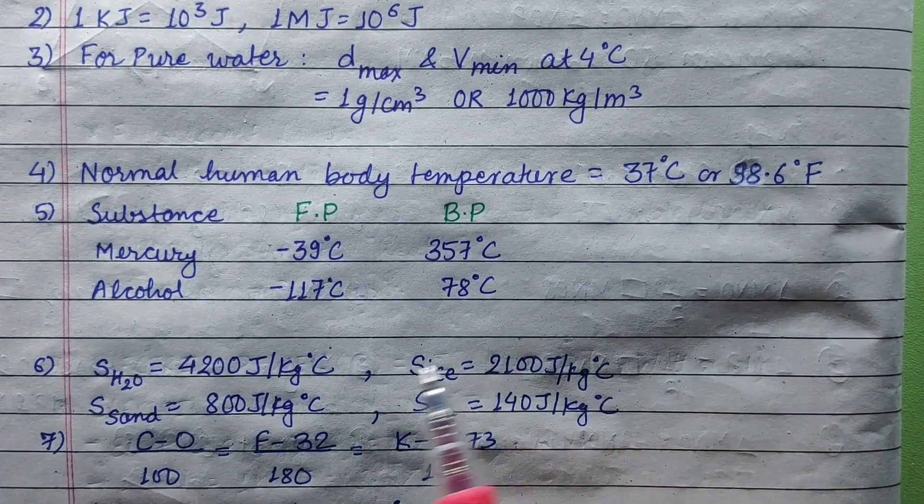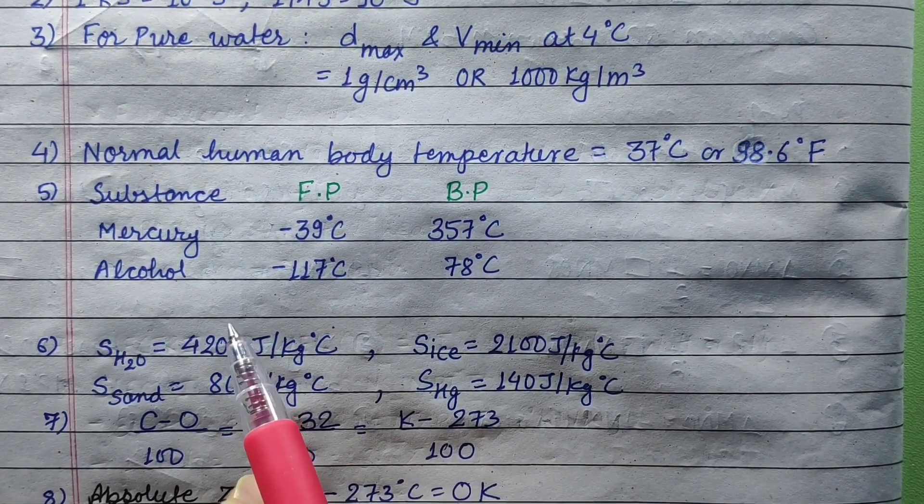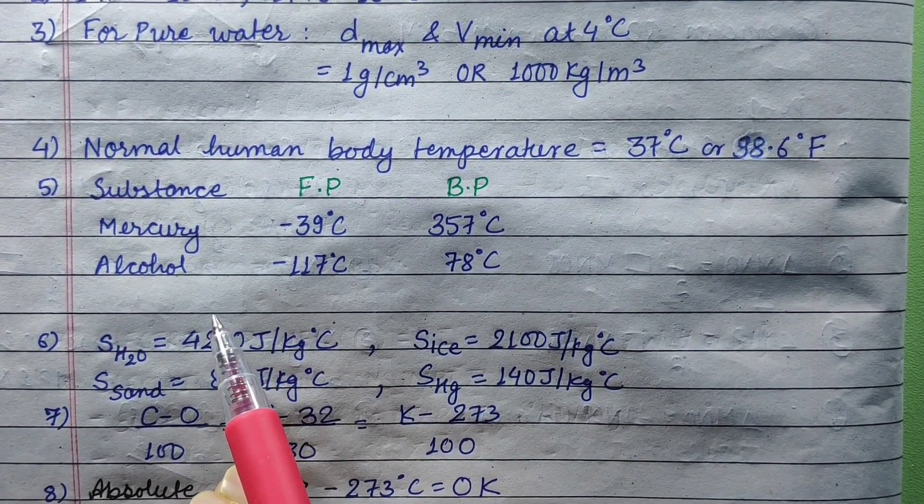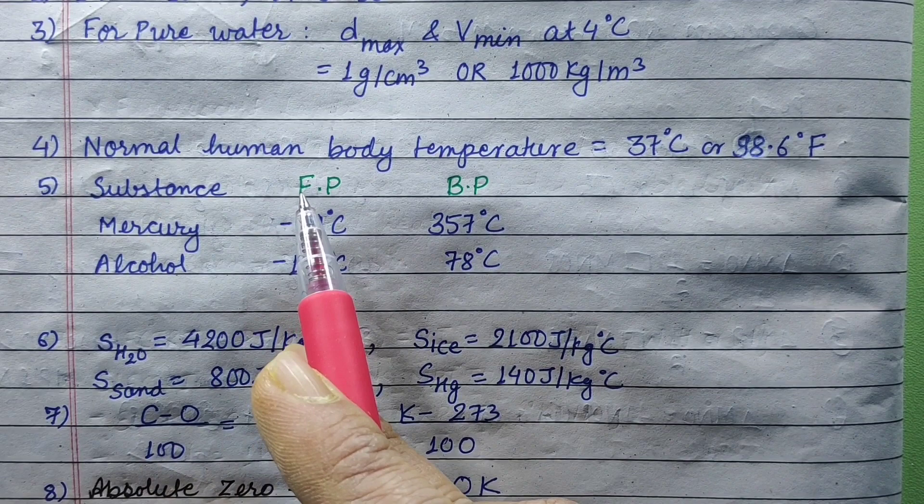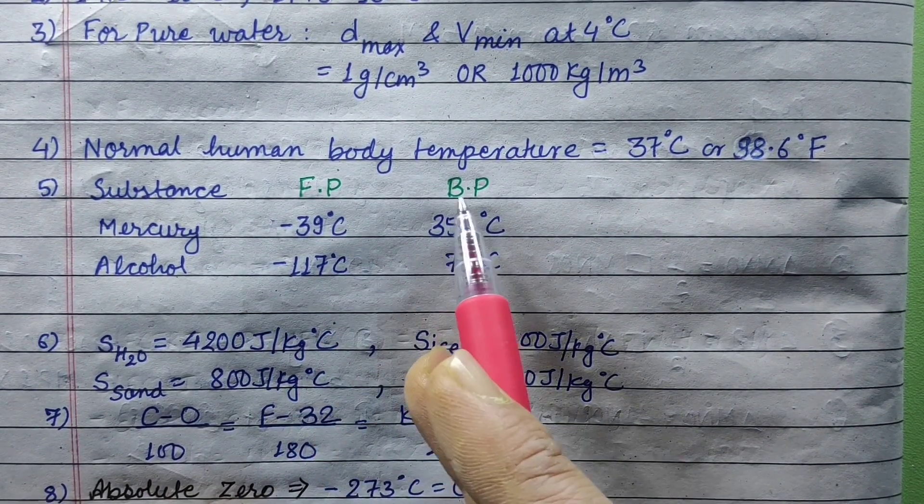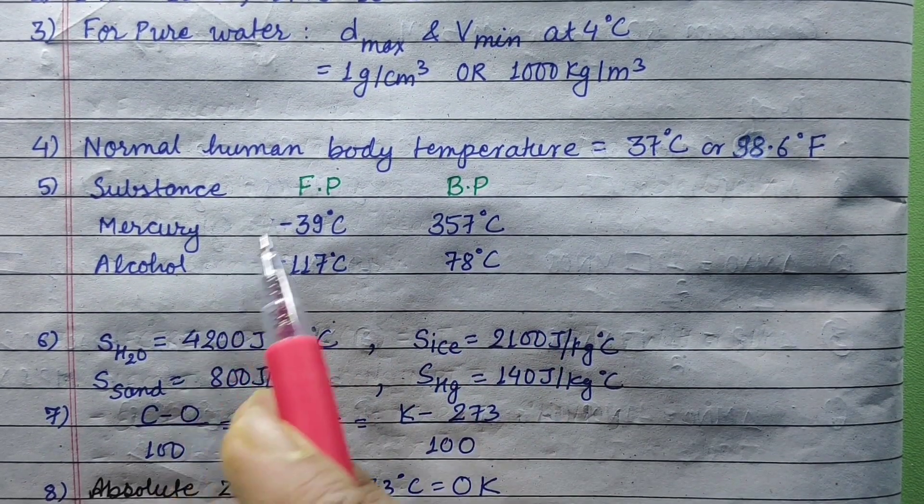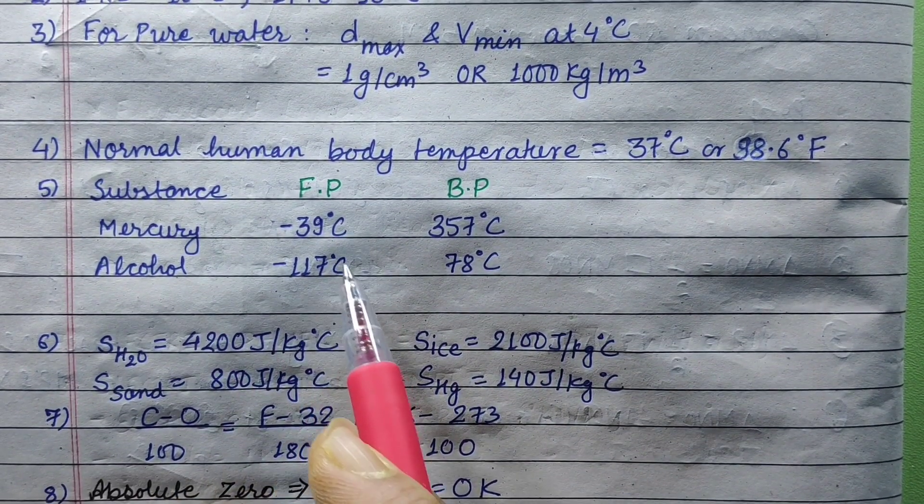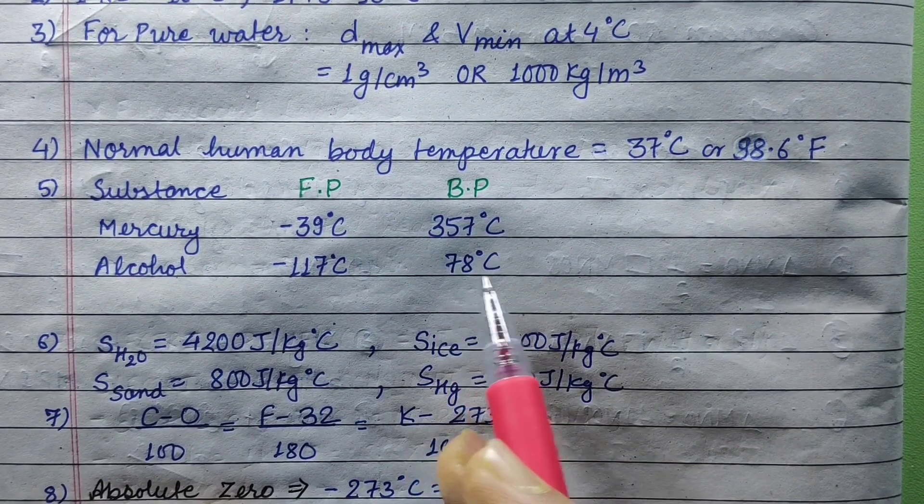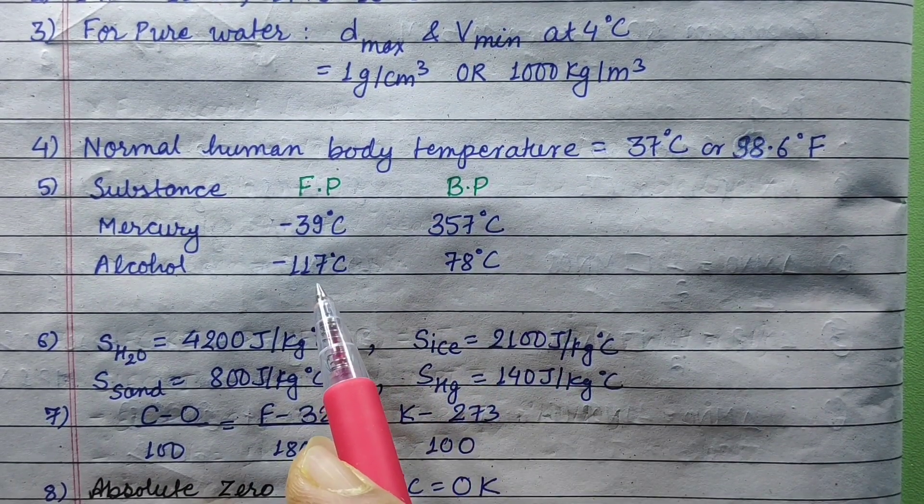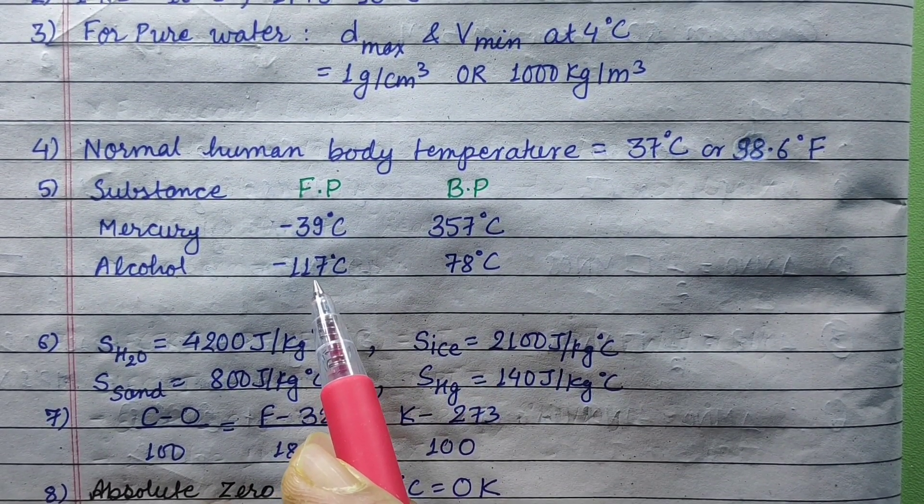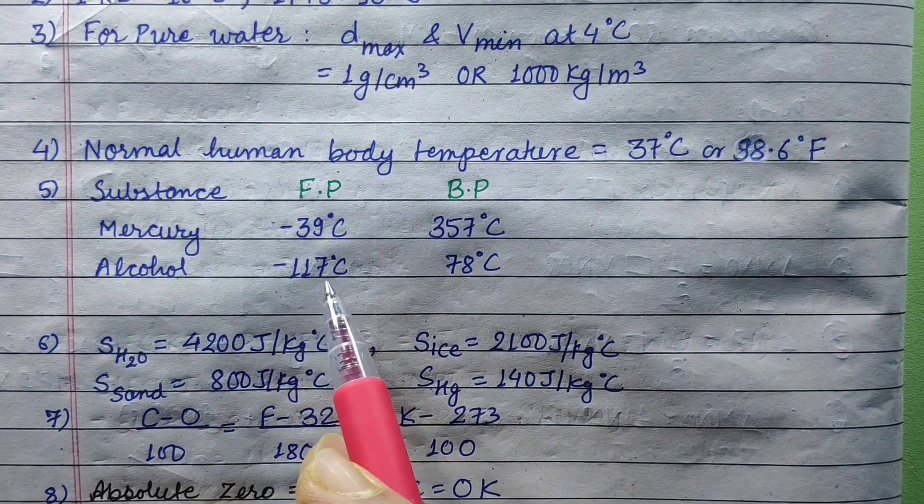Thermometric liquids are mercury and alcohol. Mercury has freezing point minus 39 degrees Celsius and boiling point 357 degrees Celsius. Alcohol has freezing point minus 170 degrees Celsius and boiling point 78 degrees Celsius. The standard is minus 170 degrees Celsius.